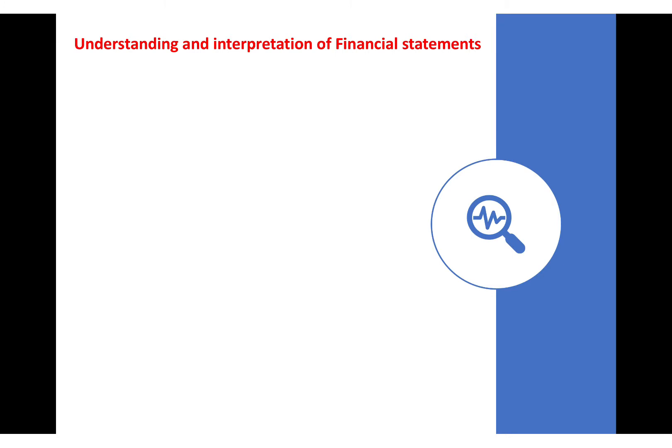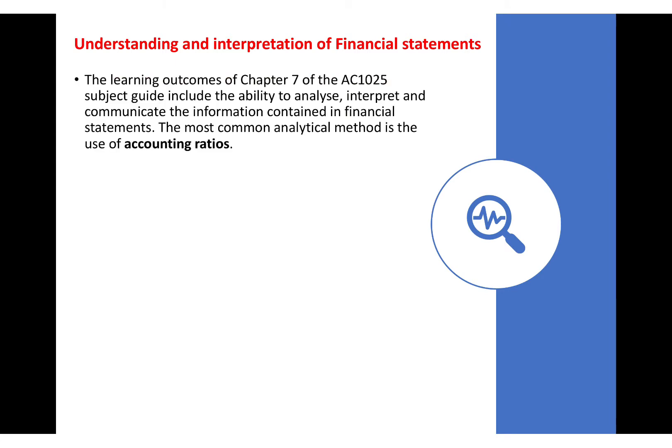Today I suggest we follow the perfect answer suggested by the University of London and the examiner's commentaries. This is year 2017 and you can download the wording of the exam using the link in the description. The learning outcomes of Chapter 7 of our subject AC1025 include the ability to analyze, interpret and communicate the information contained in financial statements. The most common and useful way to do so is the use of accounting ratios we have studied recently.